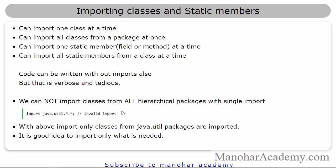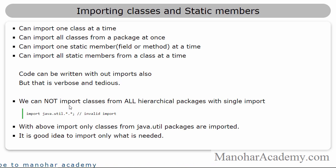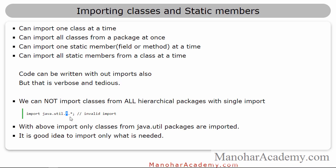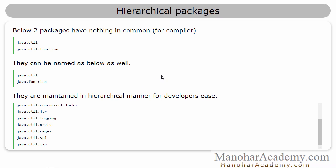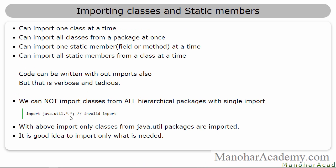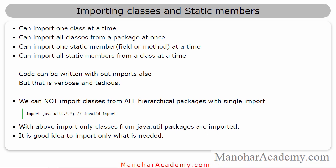In the previous slide, we saw hierarchical packages. You can never import classes from those hierarchical packages in a single import. For example, you may be thinking that inside java.util we have more packages, and all those packages can be represented by a double star — that is not true. This is an invalid import. You can't import all classes from all those packages at a single time. Just because they look hierarchical, it doesn't mean you can do that.